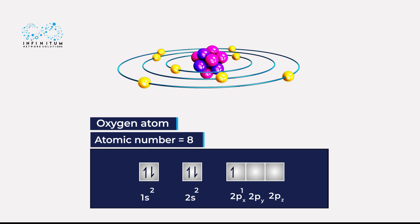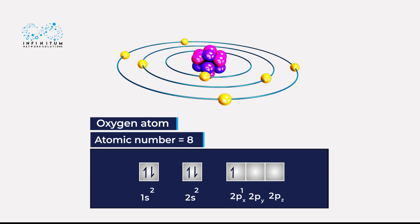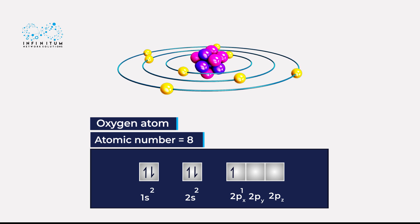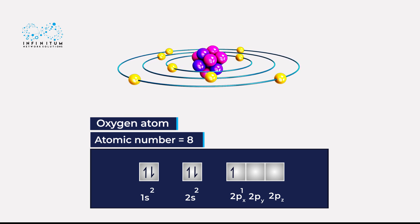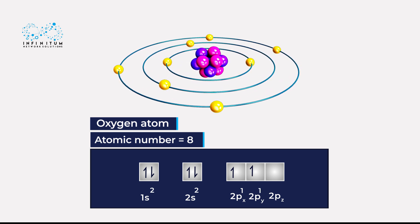Since the three 2p orbitals, 2px, 2py, and 2pz are degenerate, the sixth electron goes into 2py or 2pz, but not 2px. Let's say it goes into 2py.